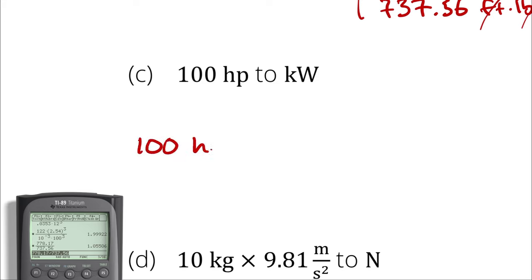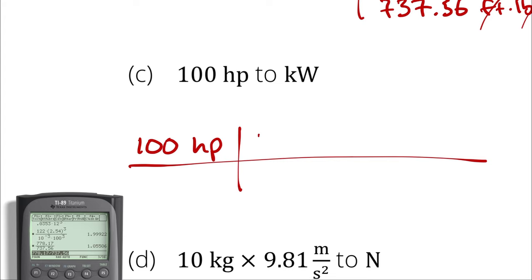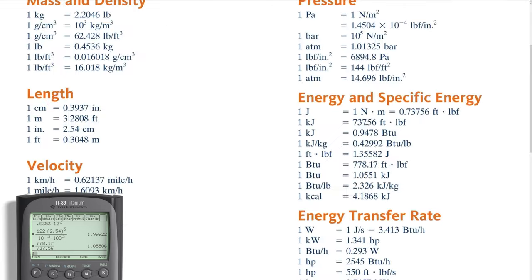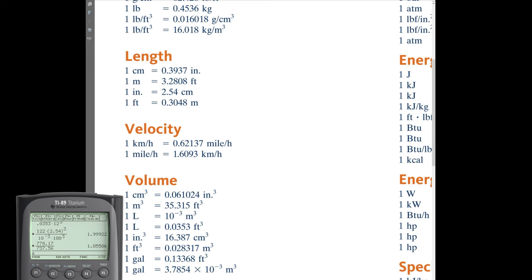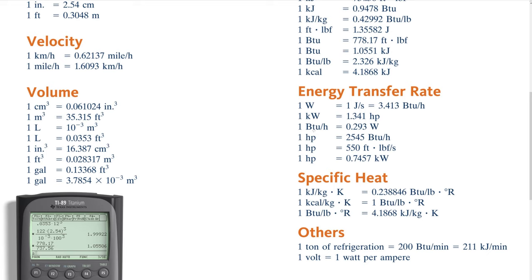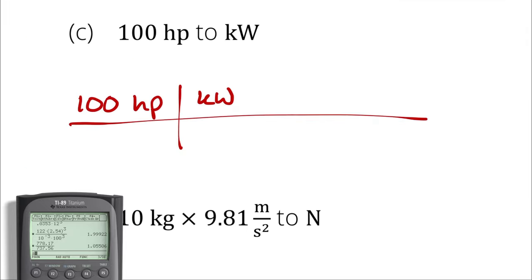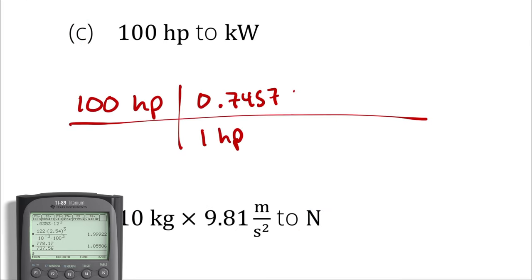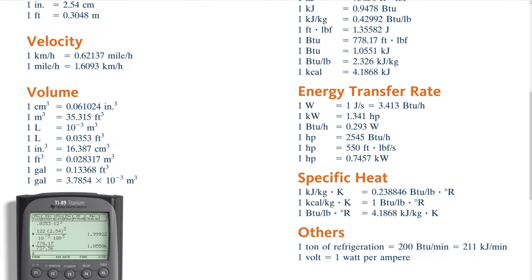For part C, we are converting from horsepower to kilowatts. Horsepower and kilowatts are both representations of power, which is energy transfer rate. Under energy transfer rate on the conversion factor sheet, I have a conversion from horsepower into BTUs per hour, horsepower into feet times pounds of force per second, and horsepower into kilowatts. So one horsepower is equal to 0.7457 kilowatts. I need to write one horsepower in the denominator and 0.7457 kilowatts in the numerator. Horsepower cancels horsepower. 100 multiplied by 0.7457 equals 74.57.